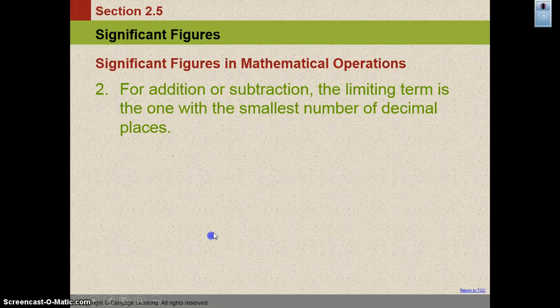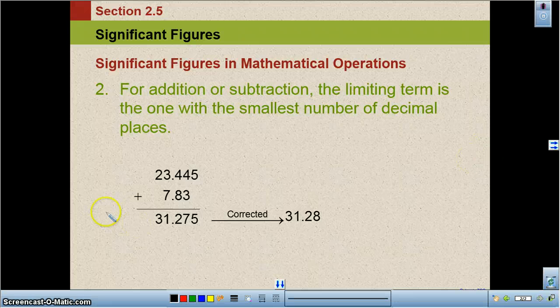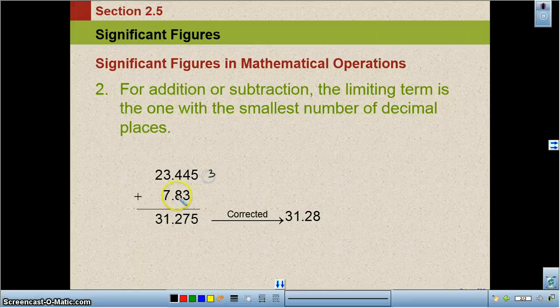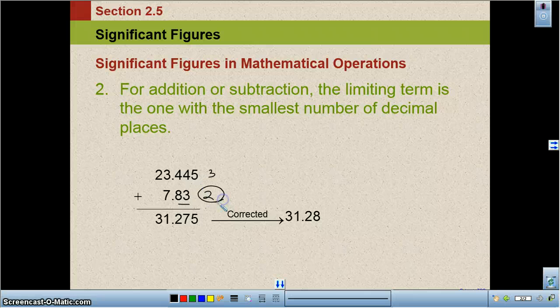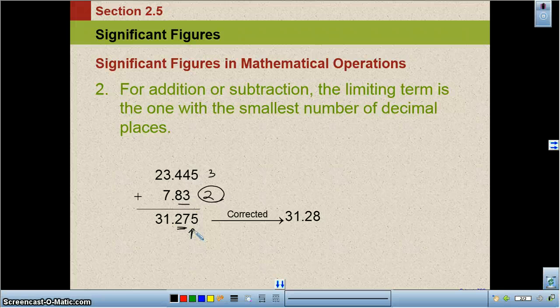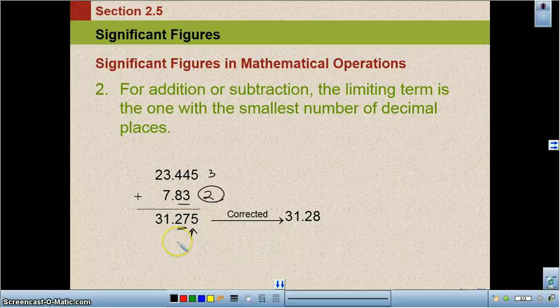There's another rule for addition and subtraction. In addition and subtraction, you can only keep as many places past the decimal as the least number past the decimal in your problem. So we look at this one. We have three places past the decimal. This one, we have two places past the decimal. I can only keep two places past the decimal because it's the least number past the decimal point. So 31.275 is what I have. I can only keep these two places past the decimal point. I look at the five. It's five or larger. So I'm going to round the seven up to an eight. So there's our correct answer, 31.28.